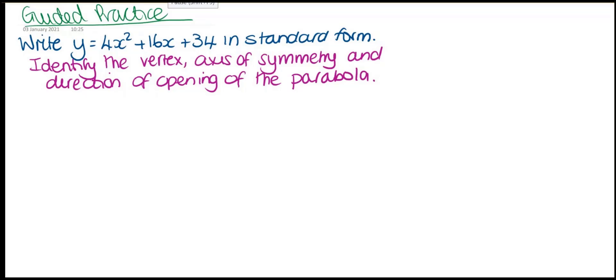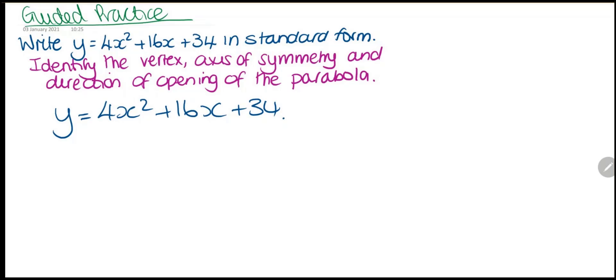Now the guided practice question: write y = 4x² + 16x + 34 in standard form. Identify the vertex, the axis of symmetry, and direction of opening of the parabola. We need to factor by 4, giving us 4(x² + 4x), leaving the plus 34 outside.